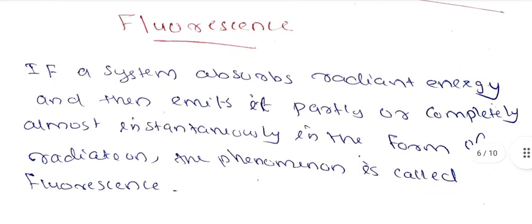What is fluorescence? If a system absorbs radiant energy and then emits it partly or completely, almost instantaneously, in the form of radiation, the phenomenon is called fluorescence. This means you can see it as a complete or partial emission continuously.